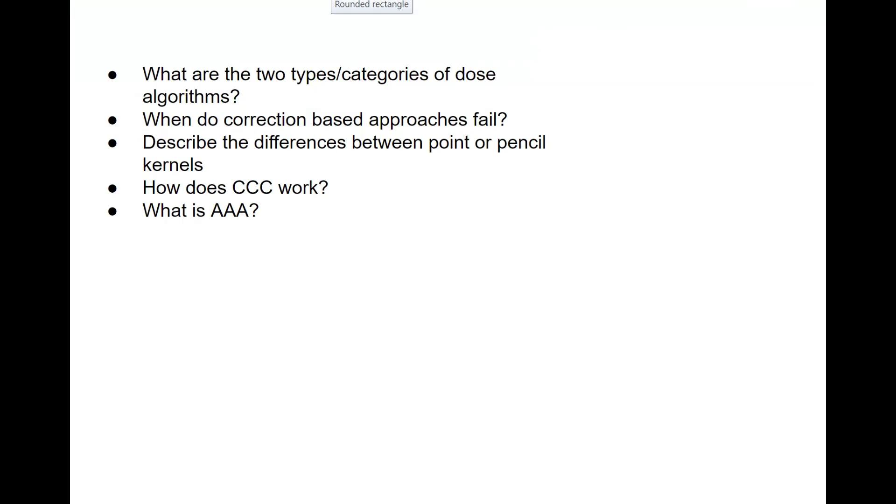Alright, so we are going to cover dose calculation algorithms today. What are the two types or categories of dose algorithms? When do correction-based approaches fail? Describe the differences between point or pencil kernels. How does collapsed cone convolution work, and what is AAA?